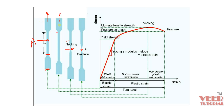From this process we plot a curve between strain and stress, and there are multiple zones in the stress-strain curve. Initially, you can see a straight line region, which is called the elastic zone or elastic strain. This means if you remove the load, the part will return to its original state.